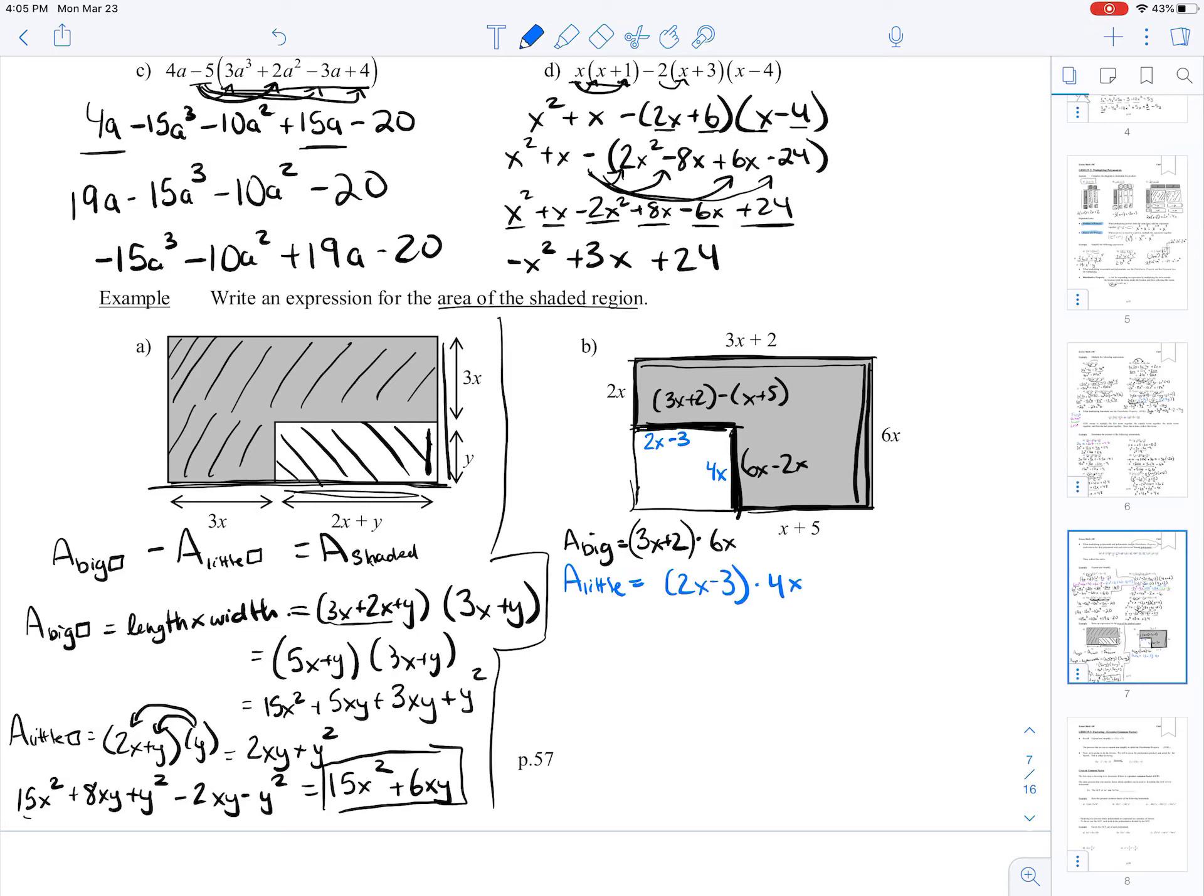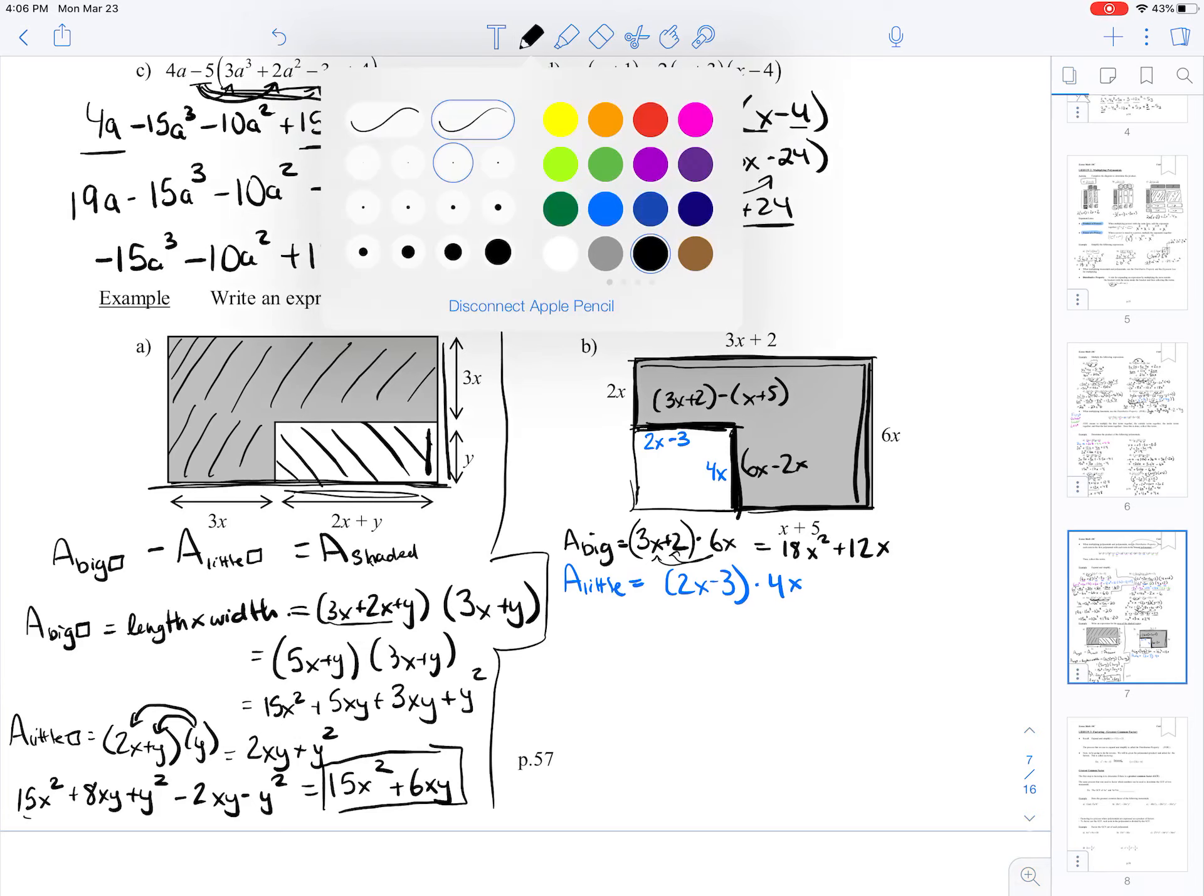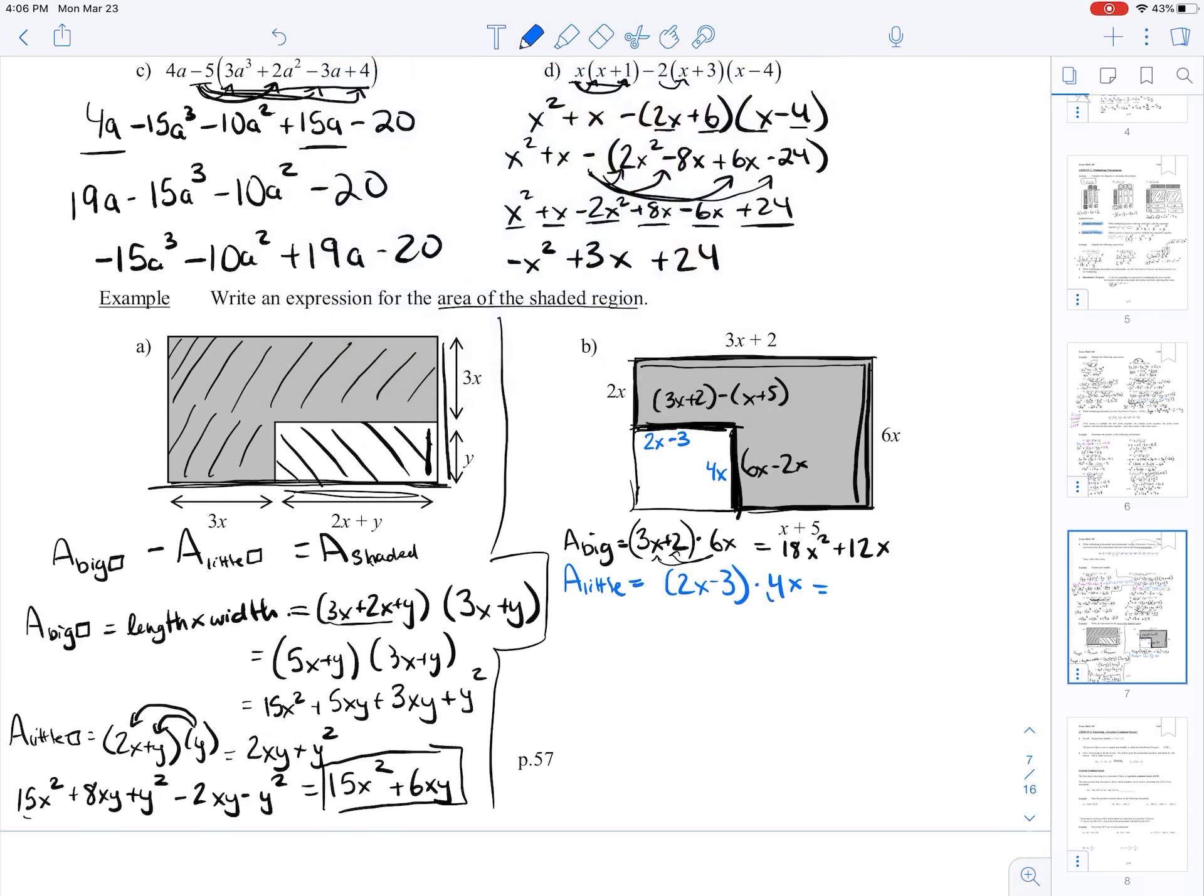Okay. So let's actually solve those, expand them. So 3x plus 2 times 6x. I'm going to distribute that 6x in. So I get 3x times 6x is 18x squared plus 2 times 6x is plus 12x. For my little area, I'm going to take this 4x and distribute it in. So I've got 2x times 4x is 8x squared. Negative 3 times 4x is negative 12x.